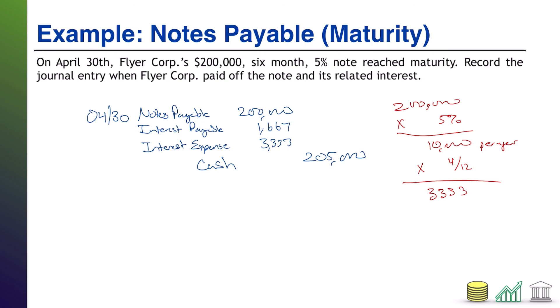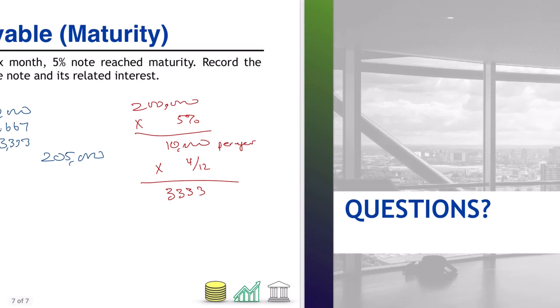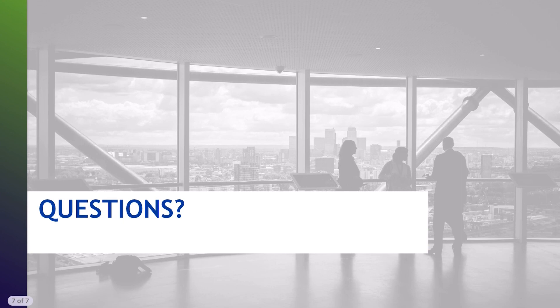This makes sense because the note had an annual interest rate of 5%, which worked out to $10,000 per year. However, the note only survived six months — half a year — which means we only paid out half the annual interest, which is $5,000. That's it for notes payable and interest payable. I hope you found this helpful and I hope you join me for another video.